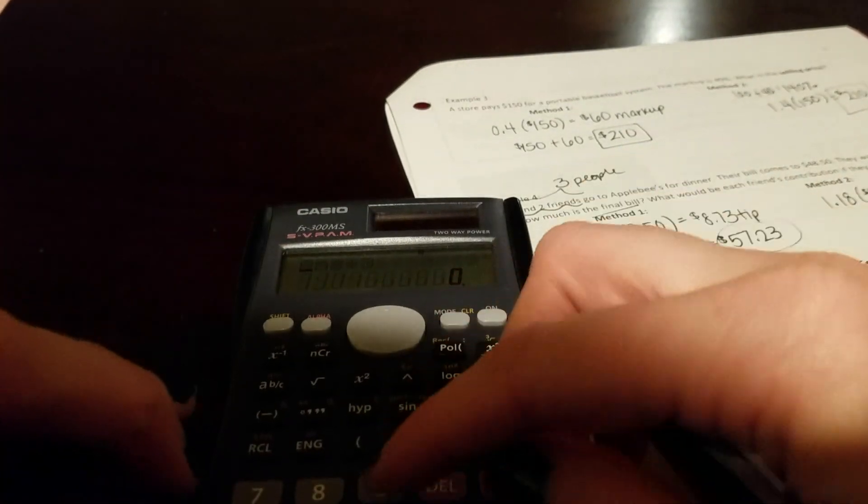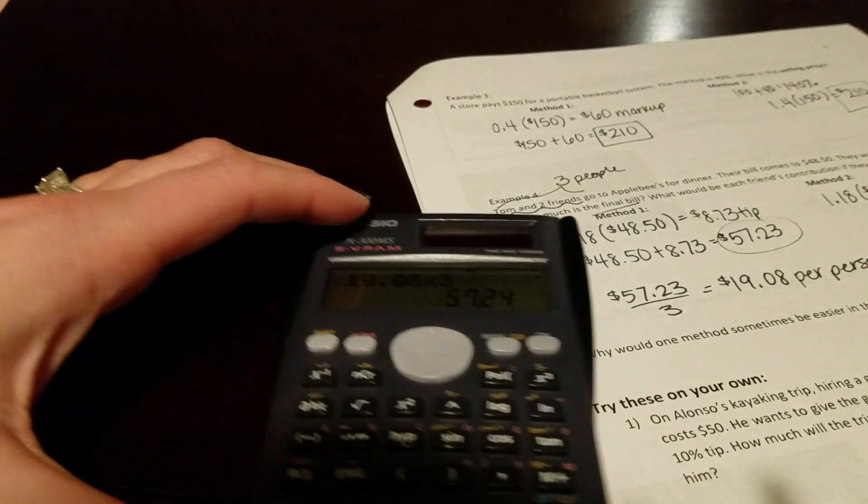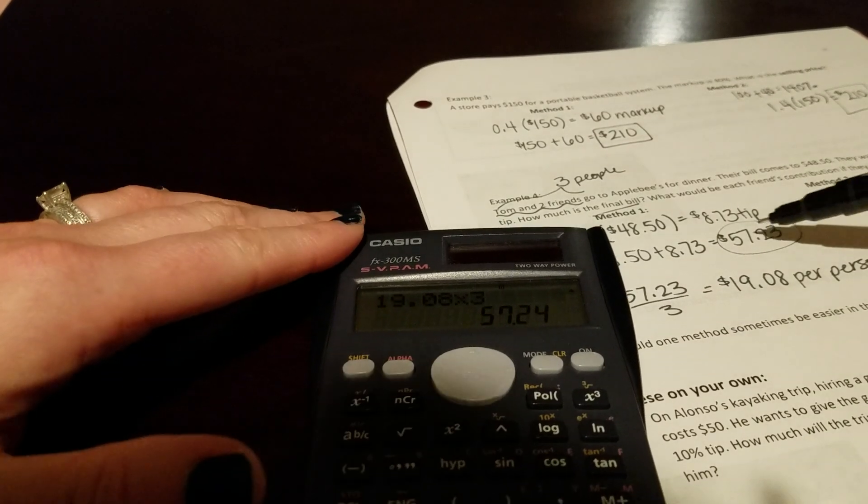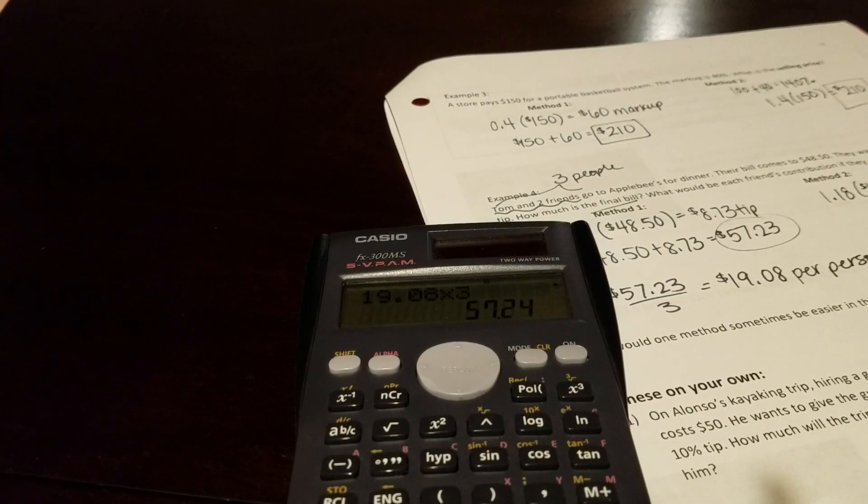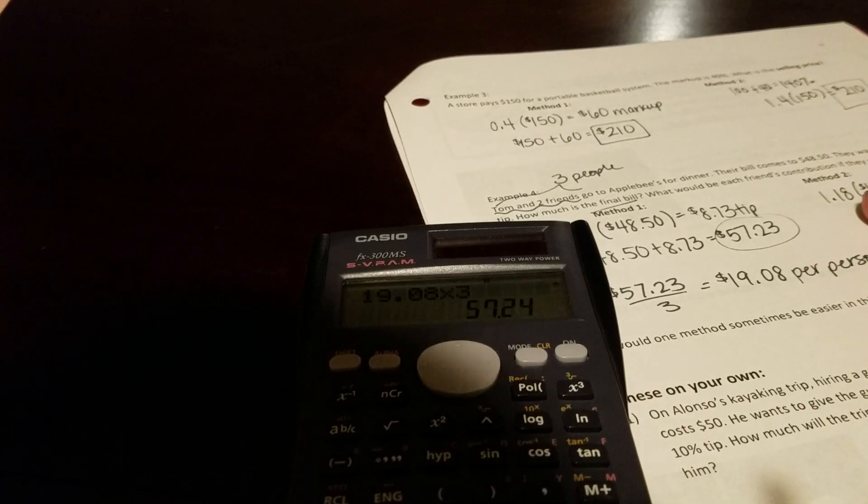Now if you actually go back and calculate that, 19.08 times three, we're going to actually end up with $57.24. So they will actually end up with one extra cent added to their final amount, but this allows it to be split equally.